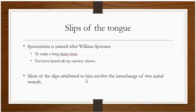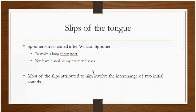Most of the slips attributed to William Spooner involve the interchange of two initial sounds. For example, look at 'mist' and 'history': the initial sound of 'history' has gone to 'mist', and the initial sound of 'mist' has gone to 'history'. So that interchange is there.